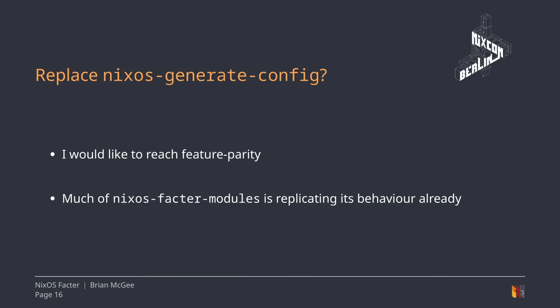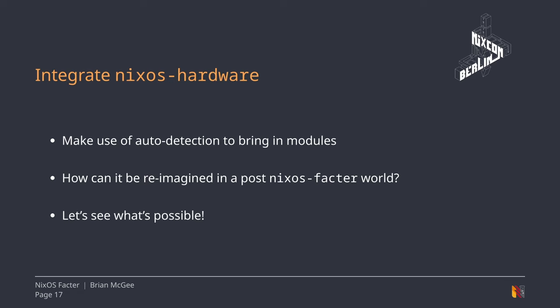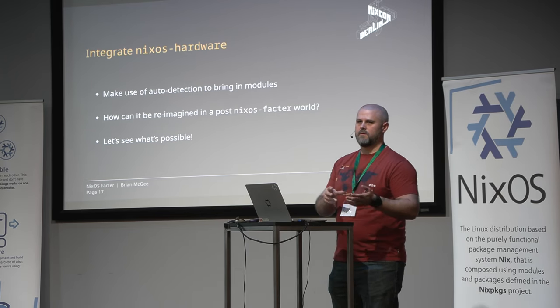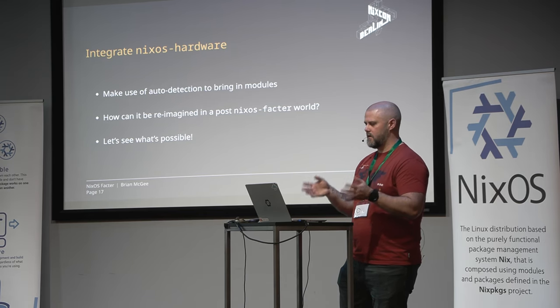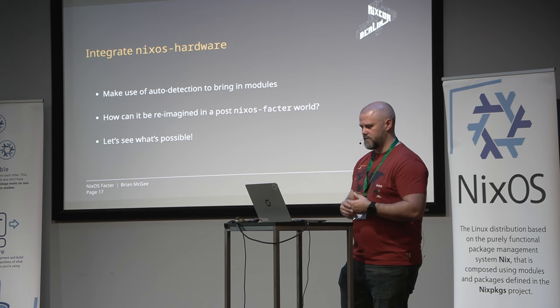Eventually we may be able to replace nixos-generate-config with this, if there's interest and traction. Much of the modules we've done right now are trying to replicate its behavior, and there are some more features we'd need to add to reach parity, but I don't think it would be difficult. We also think we should start integrating nixos-hardware — there's a lot of logic we can remove from it and just pull in bits and pieces based on what we detect. It would allow more cross-cutting modules to be developed that target specific vendors, specific device types, rather than having to target a specific model.